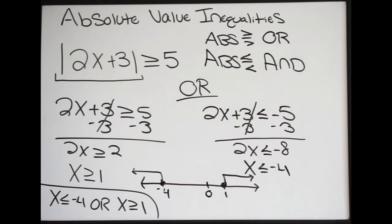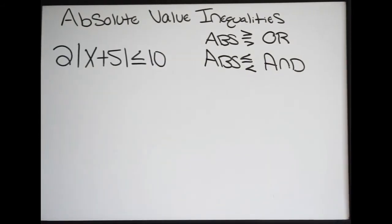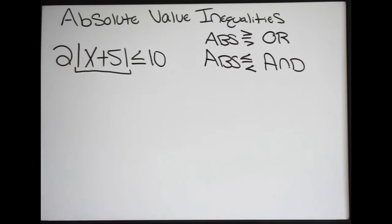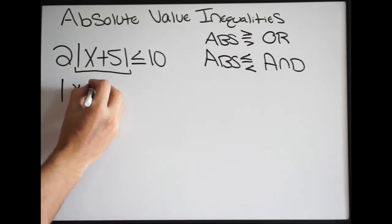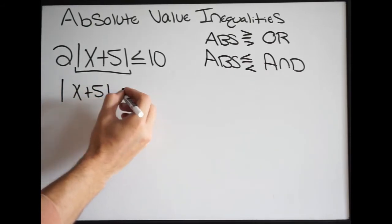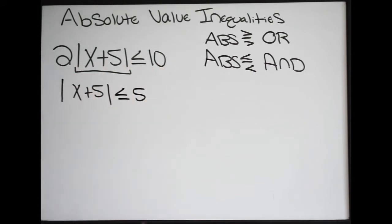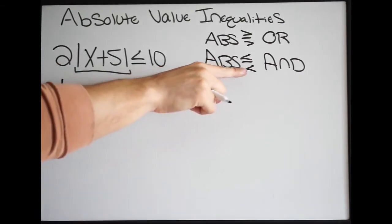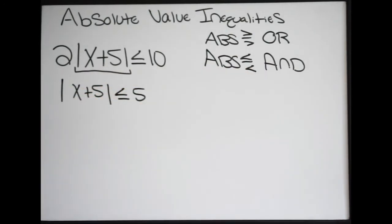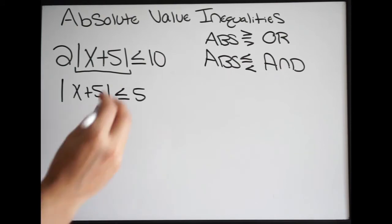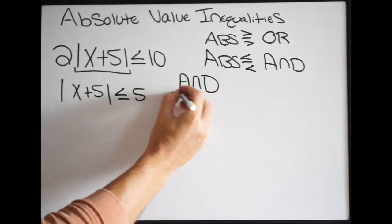Let's try another example. Our first step is we want to isolate the absolute value — I need to get rid of this 2. Notice it is multiplication, so we're going to divide both sides by 2. Doing that, you get the absolute value of x plus 5 less than or equal to 5, because 10 divided by 2 is 5. Now that we have the absolute value isolated, we look at our inequality. The absolute value is less than or equal to, so our separator is going to be AND — meaning it's going to be a conjunction.